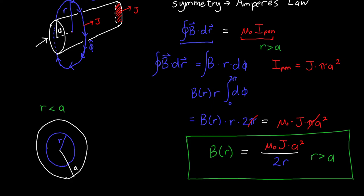So the total current, i-pen, is equal to j times not the area of our cylinder, but the area of our loop that we've taken. So pi times little r squared. And so this changes things pretty substantially.